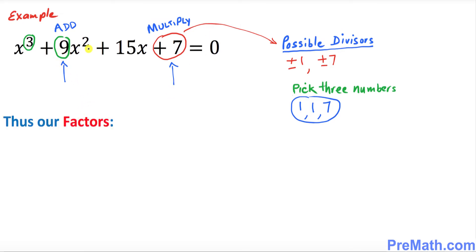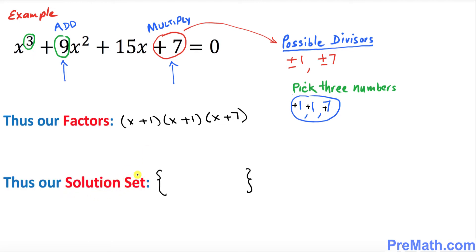So our factors of this cubic equation are simply: whatever you got — positive 1, positive 1, and positive 7 — you just write x plus 1 times x plus 1 times x plus 7, and these are the factors. Our solution set is simply the same numbers with the sign changed: positive 1 becomes negative 1, positive 1 becomes negative 1, and positive 7 becomes negative 7. That is your answer.